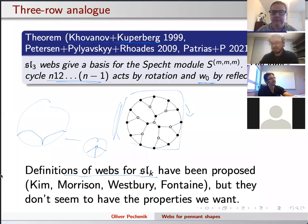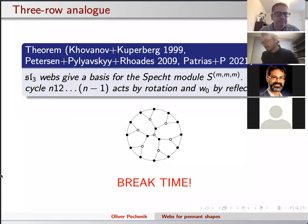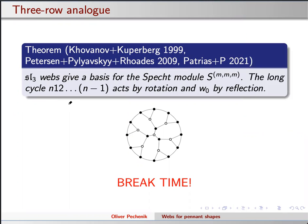Welcome back to the second part of Oliver's talk. In the two-row, in this three-row rectangular setting, we had our standard monomial basis that came out of things very nicely, very generally, but didn't have a lot of the combinatorial properties that we wanted.